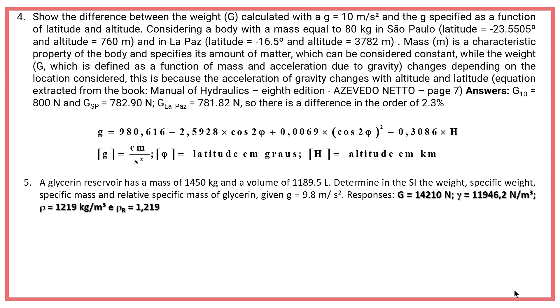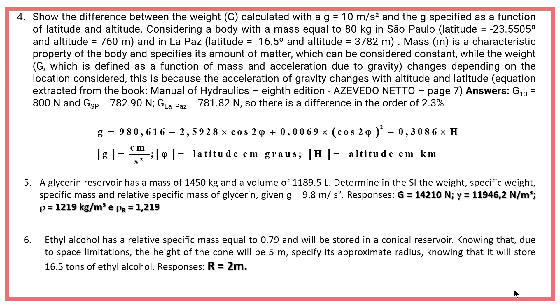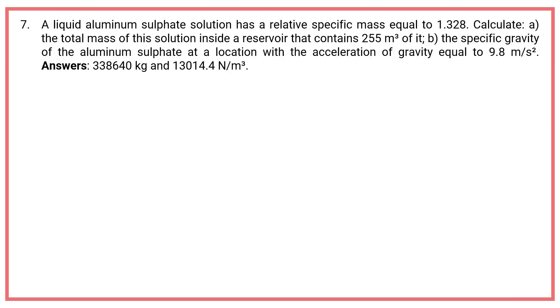Sixth, ethyl alcohol has a relative specific mass equal to 0.79 and will be stored in a conical reservoir. Knowing that due to space limitations the height of the cone will be 5 meters, specify its approximate radius, knowing that it will store 16.5 tons of ethyl alcohol. Response.